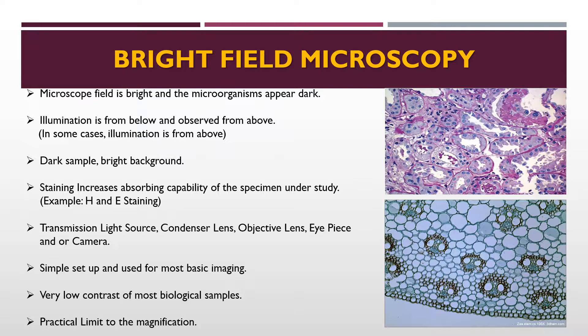Bright field microscopy is simple to set up and is required for all basic imaging, making it essential equipment for research. However, limitations include very low contrast for most biological samples and a practical magnification limit — beyond 2000x the image becomes fuzzy or blurred. Colorless and transparent samples cannot be imaged properly, although you can enhance the image by adjusting the light source, using an oil immersion objective lens for specific specimens, or using staining methods such as hematoxylin and eosin staining.